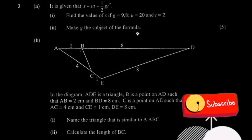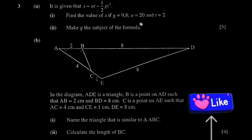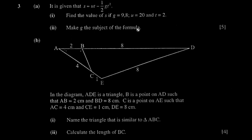Welcome to PrimaEd. Today we're going to continue with our paper for 2010. It says it's given that s equals ut minus half g t squared. If you're doing physics, you probably know it — this is the displacement-time equation, based on Newton's laws.